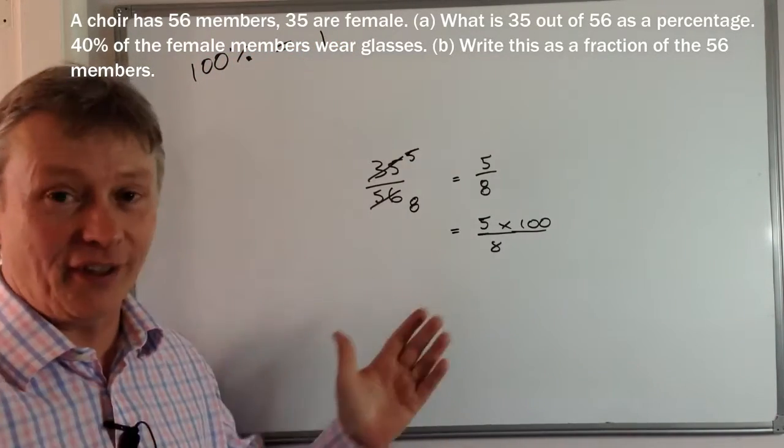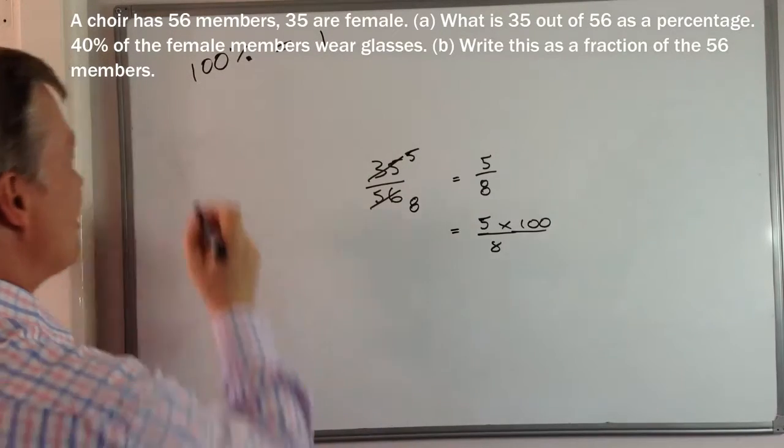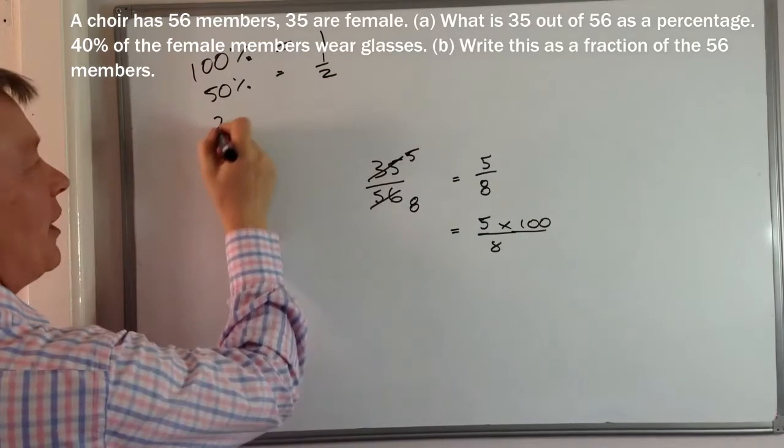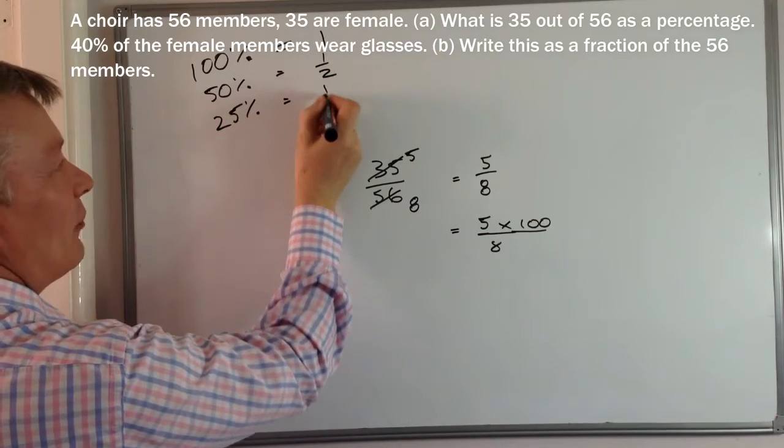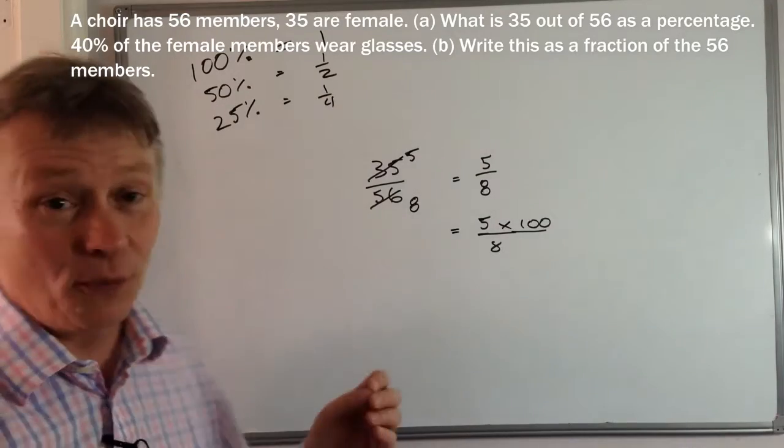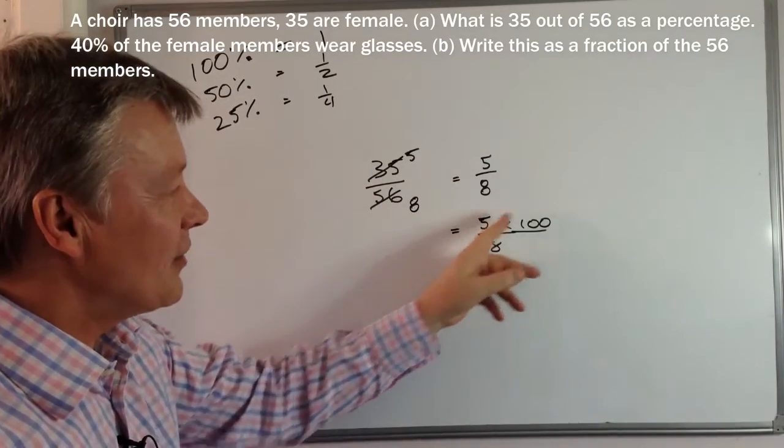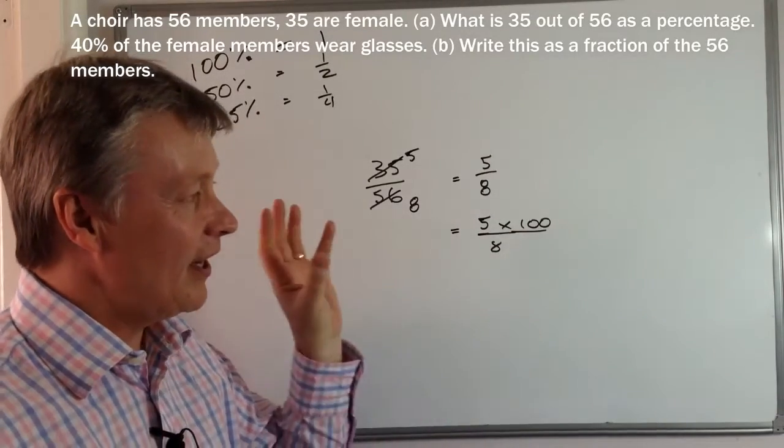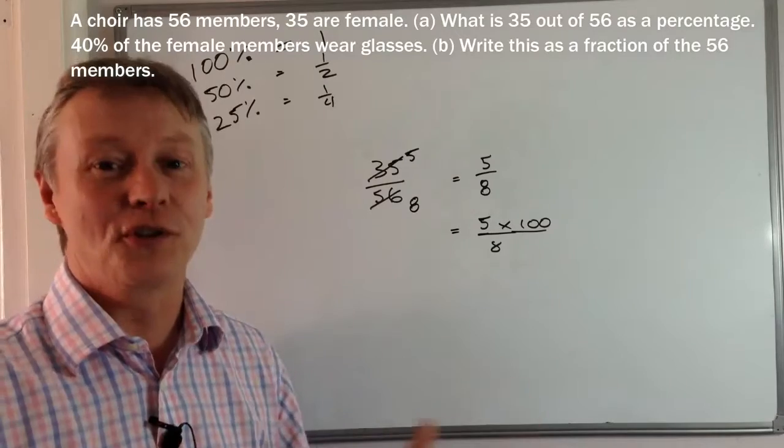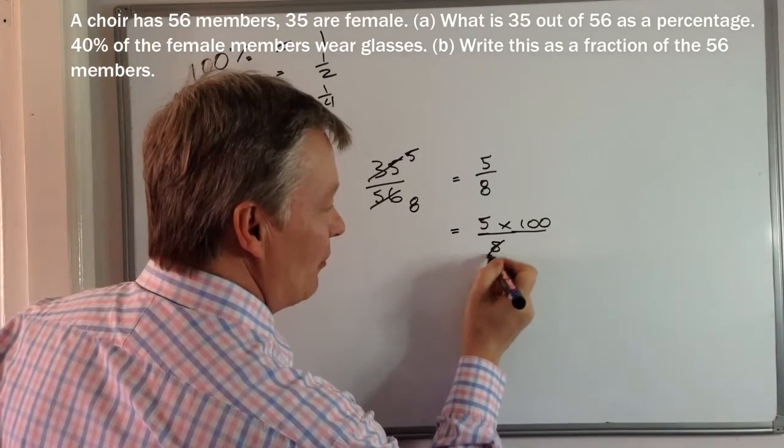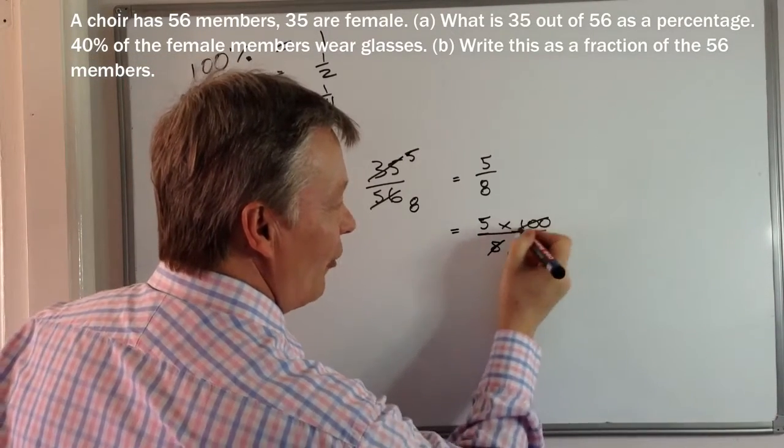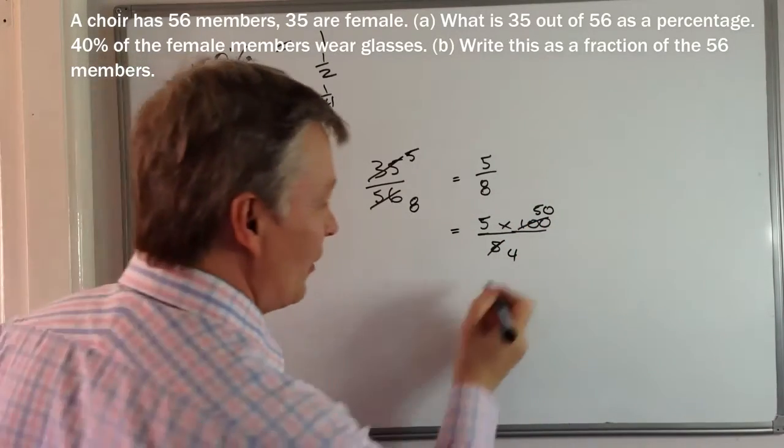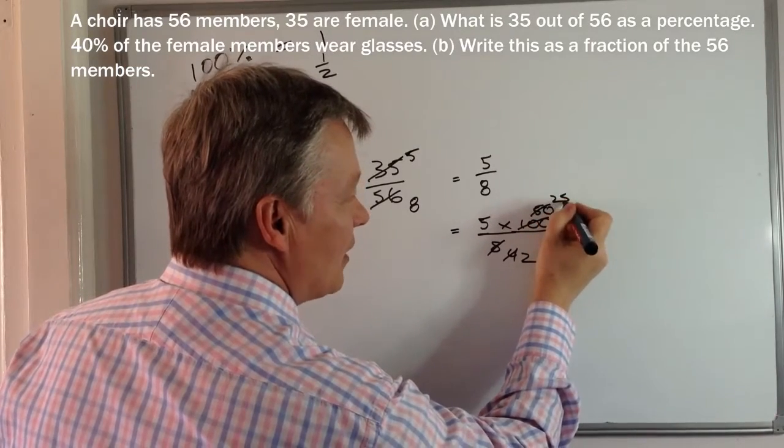But remember a hundred percent means one. It means one whole one. It means everything there is is a hundred percent. So 50% is half of that, which means a half or 25% is a quarter of that, which means a quarter. So what we're saying is that it's five eighths of the hundred. Okay. So I could use equivalent fractions to reduce this a little bit further. So if I divide the top and bottom by two, I get 50 over four. I'm going to divide it through by two again. I get two and 25.